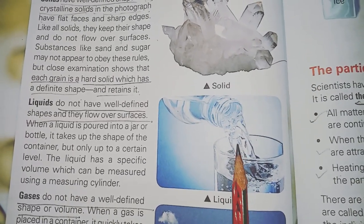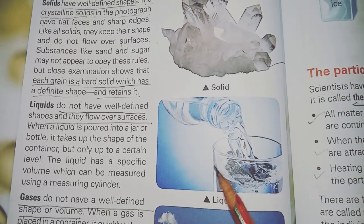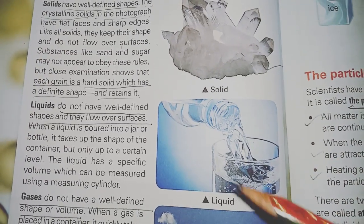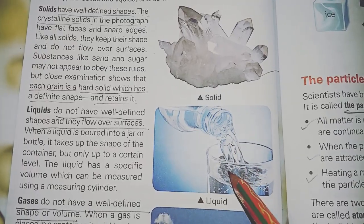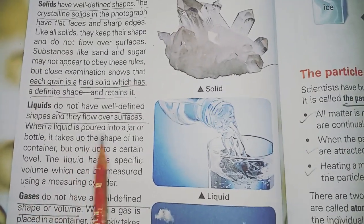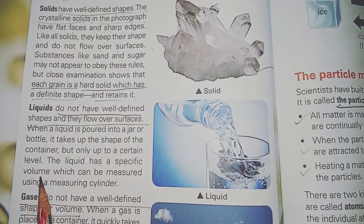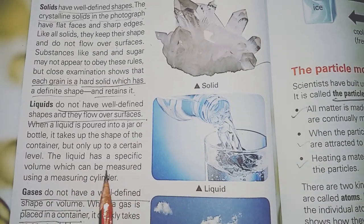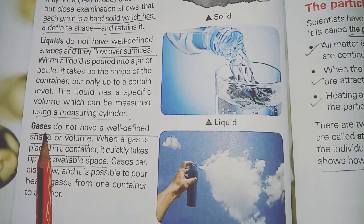Liquids can cover an area and change into any shape of the container into which they are poured. When a liquid is poured into a jar or bottle, it takes up the shape of the container but only up to a certain level. The liquid has a specific volume which can be measured using a measuring cylinder.